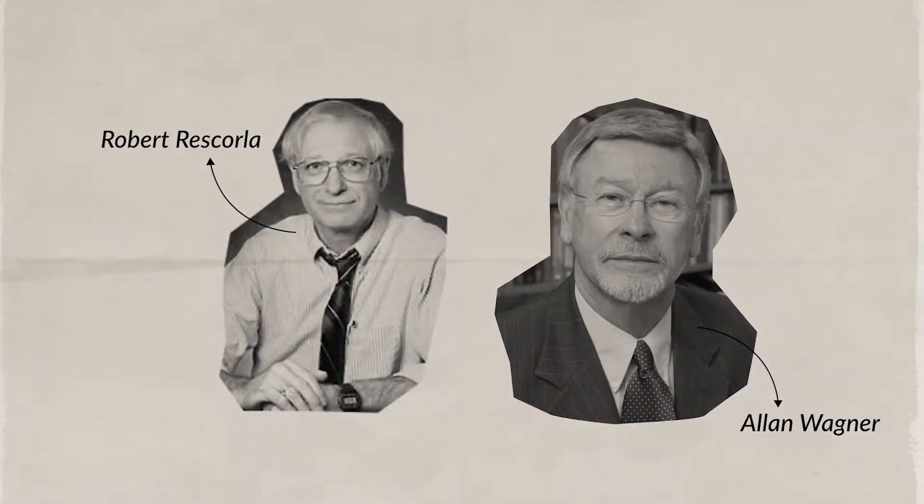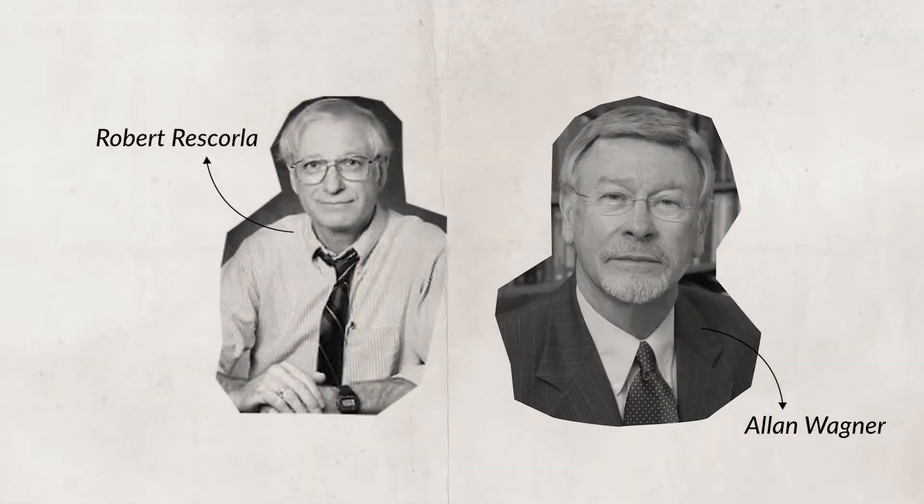Looking at the work of Robert Rescorla and Alan Wagner, we can see the importance of cognition in learning. They showed that animals can be taught to expect the outcome of an event. They had two groups of rats: one given a conditioned stimulus (a tone) and an unconditioned stimulus (a shock) at the same time; the second group received the tone and shock but not always simultaneously. Conditioning occurred for the first group but not the second — the more reliable and predictable the association between the conditioned and unconditioned stimulus, the more association will occur.